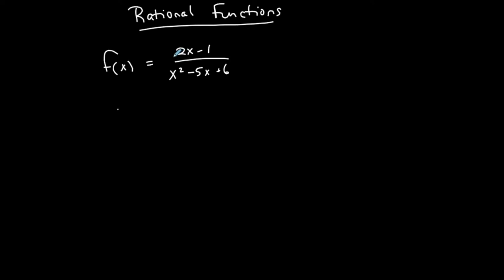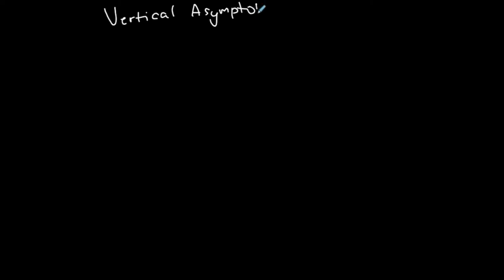We're going to talk about graphs of rational functions, but really what I want to discuss are what we call vertical asymptotes, horizontal asymptotes, and holes. So let's start with vertical asymptotes.